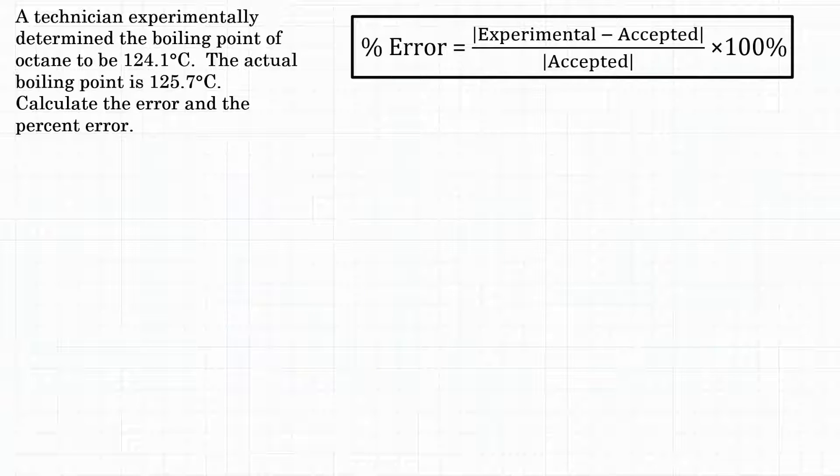So in this problem, we're calculating percent error, and to calculate percent error, we also will have to calculate error. The problem gives us two pieces of information. We get that the experimentally determined boiling point is 124.1 degrees Celsius. So 124.1 degrees C is our experimental value. It's what we did in real life or in lab.